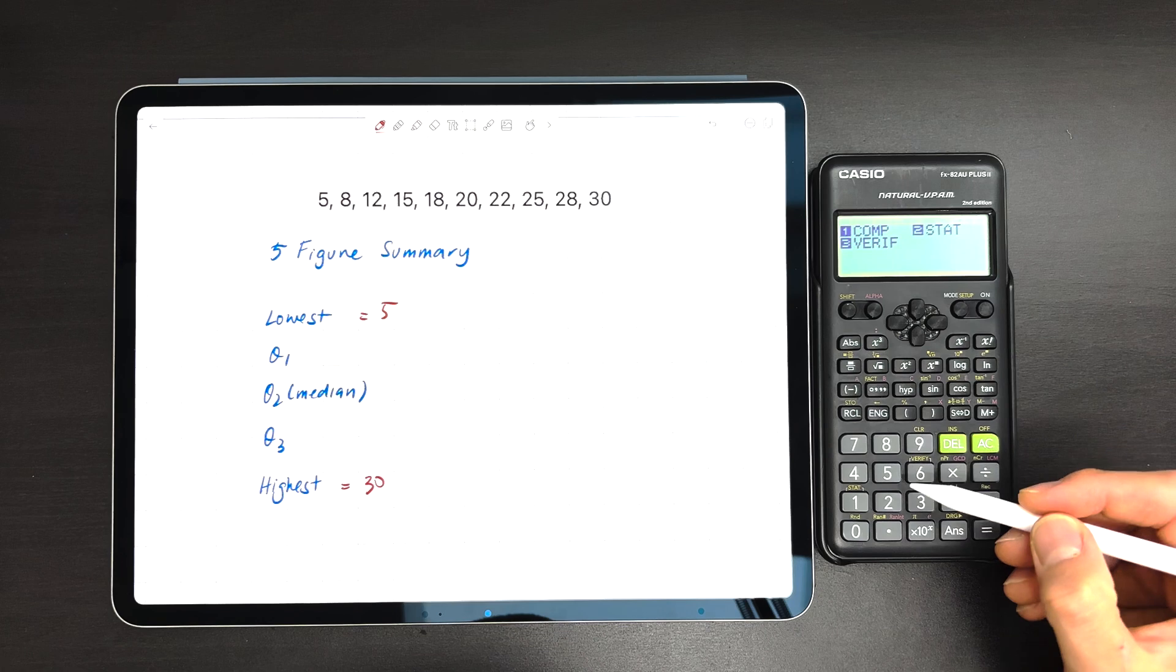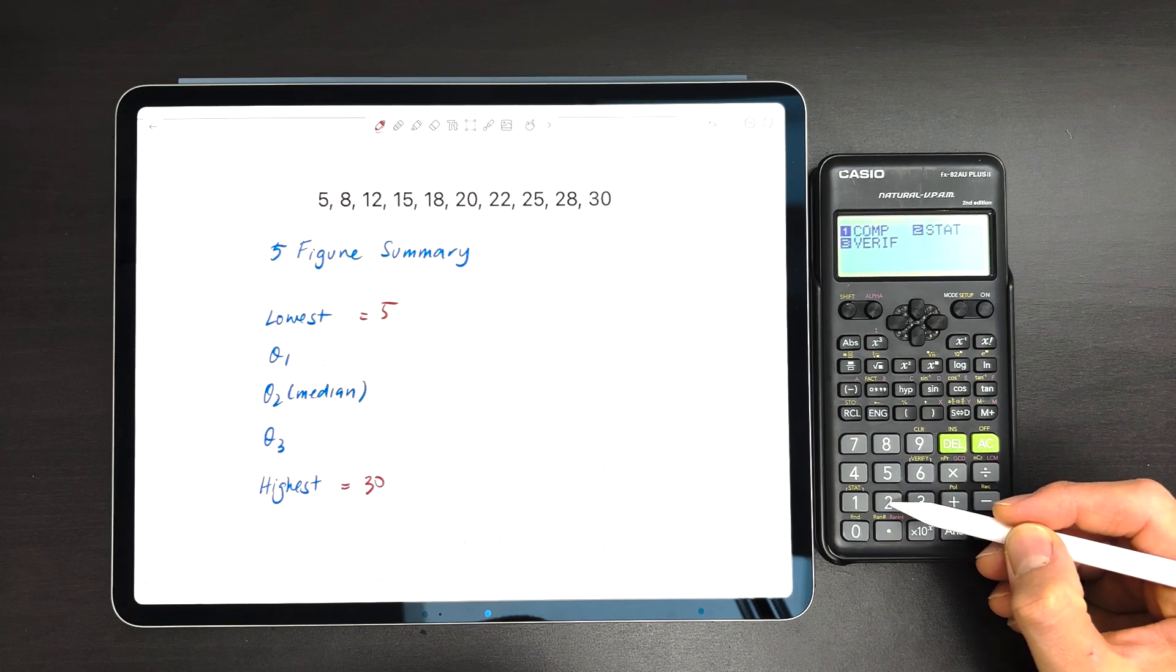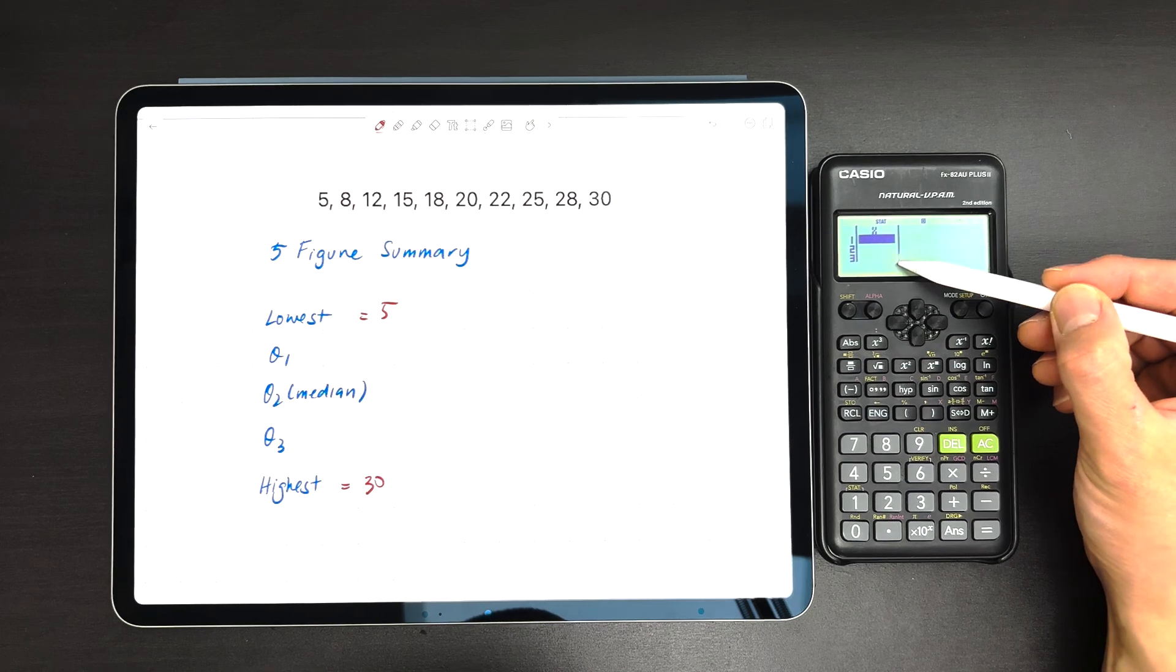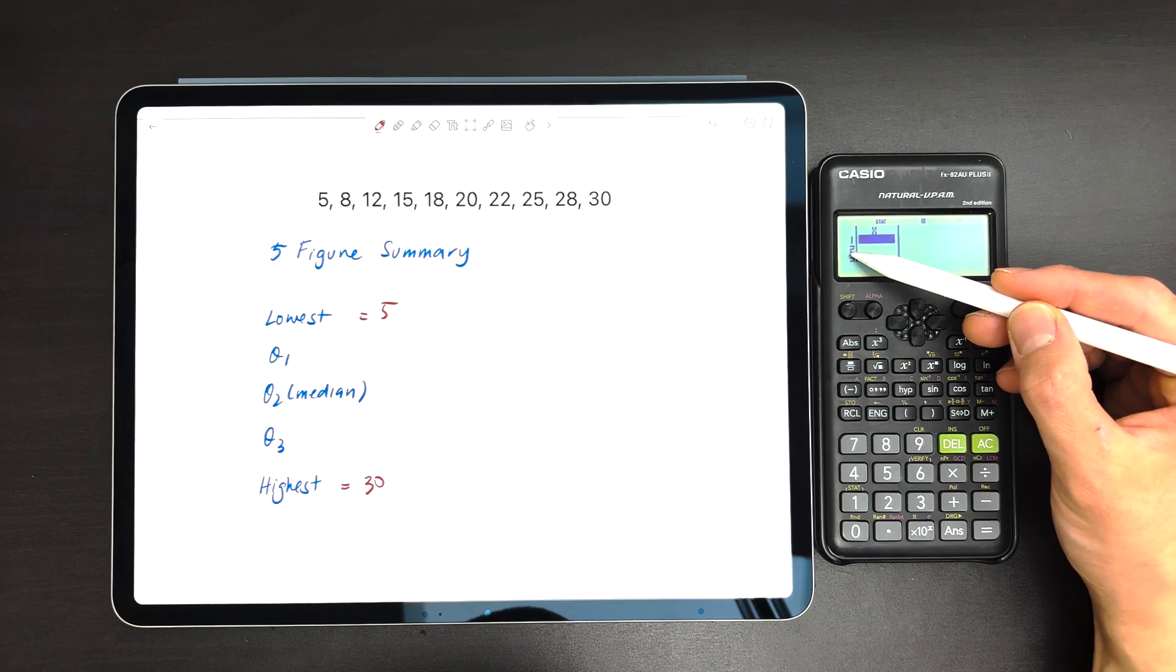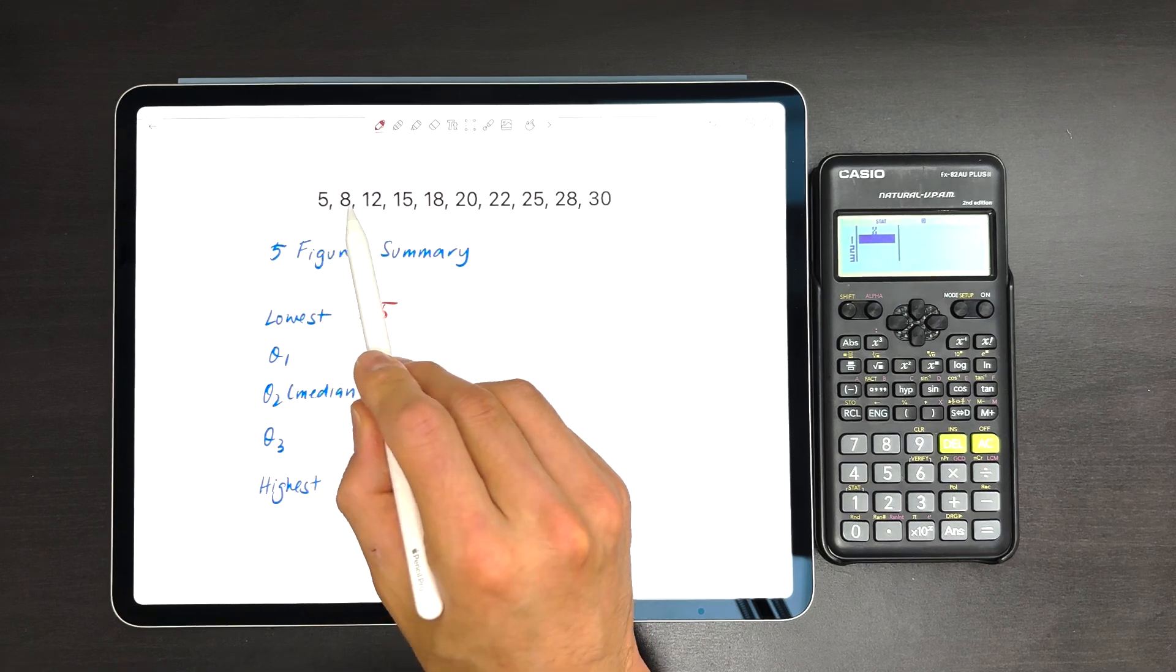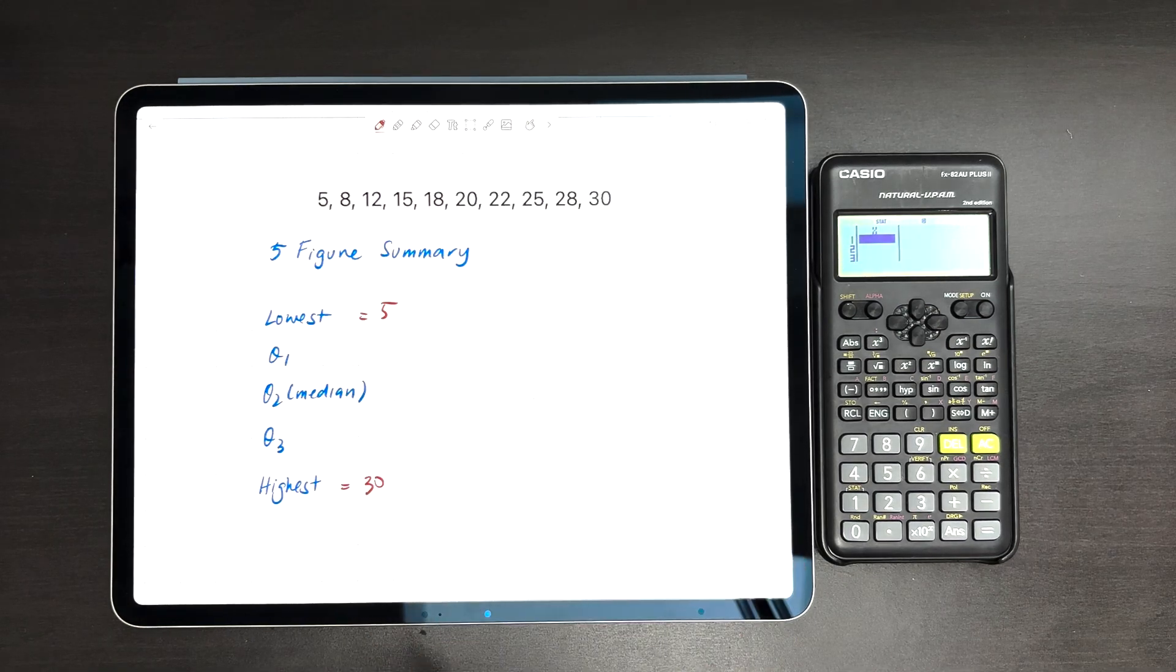Press mode, then press 2 for stat (statistics), and press 1 for 1 var. Now you'll see a table come up with an X column. Don't worry about the numbers 1, 2, and 3. All we need to do is put these numbers in one at a time and press equals as we go.